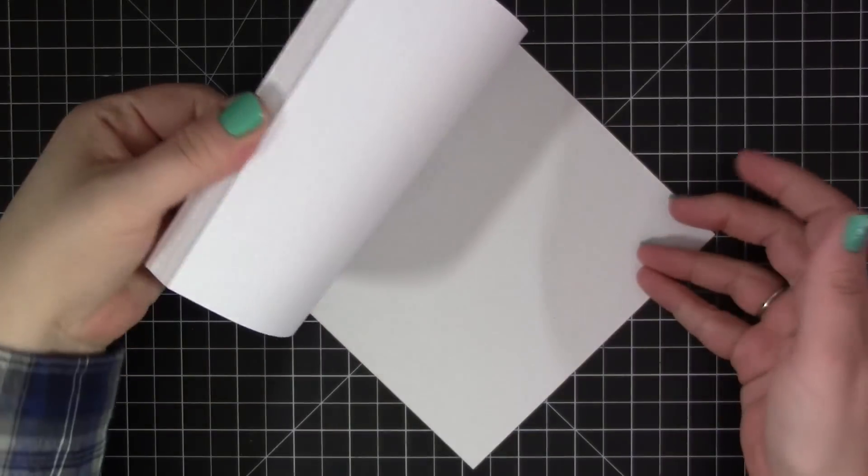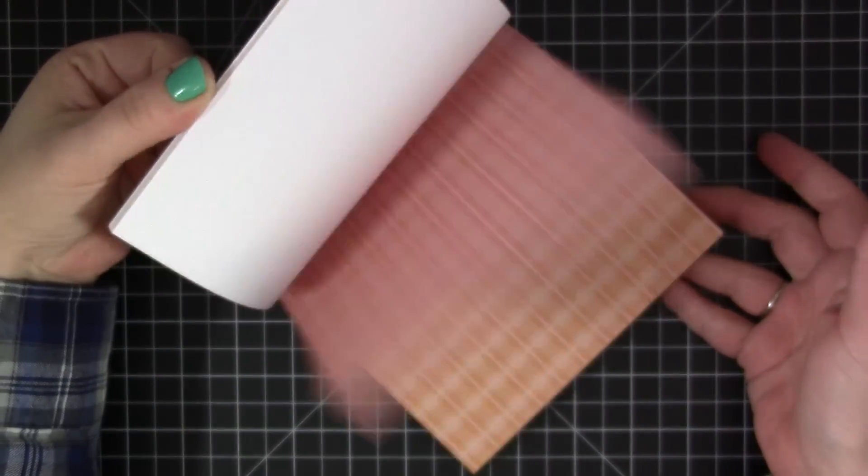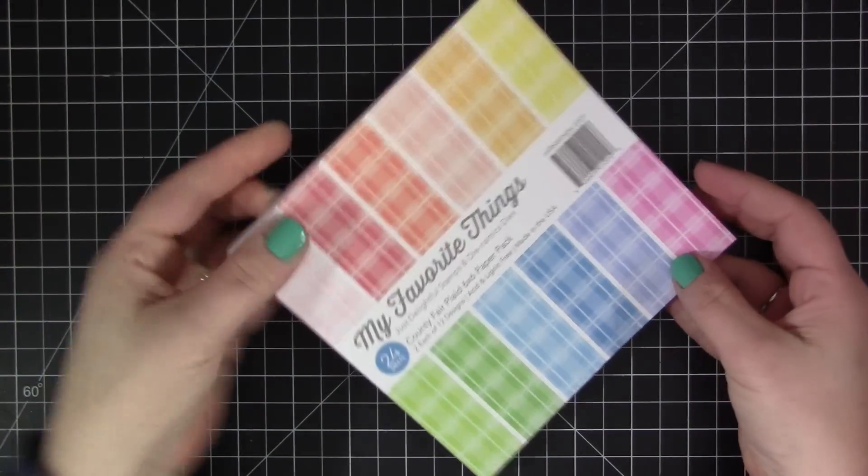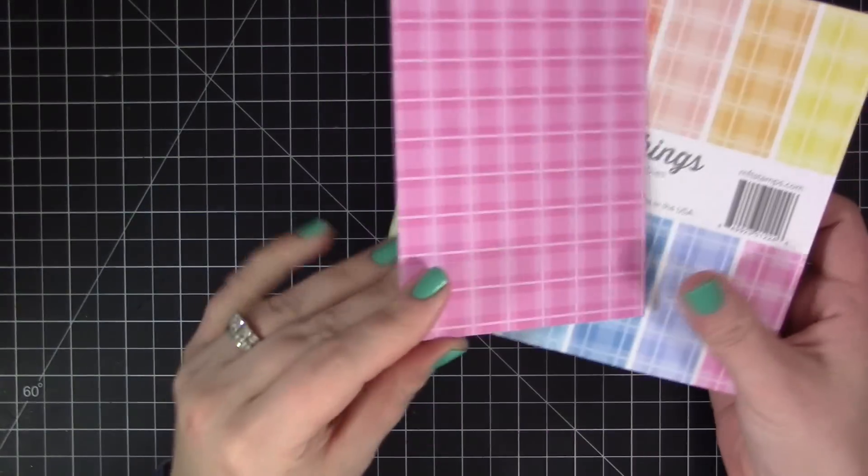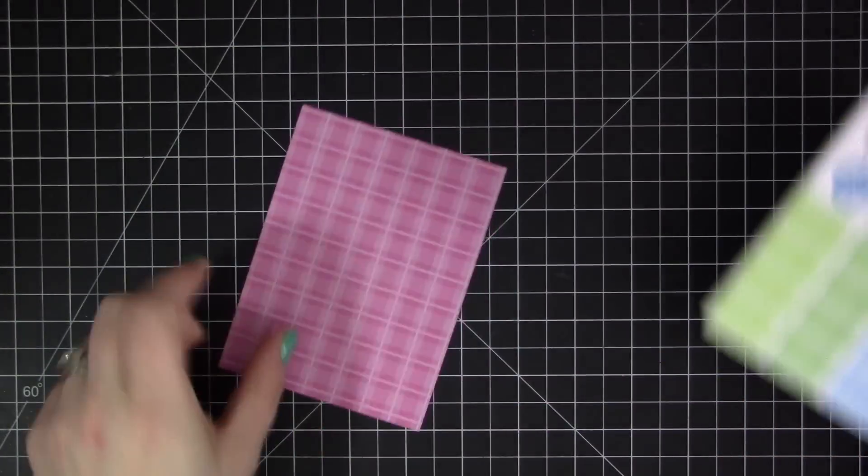To start off, I'm going to be choosing a piece of pattern paper from the new County Fair Plaid 6x6 paper pad. You can see here we have a ton of great colors included in this paper pad, all featuring this great plaid design.